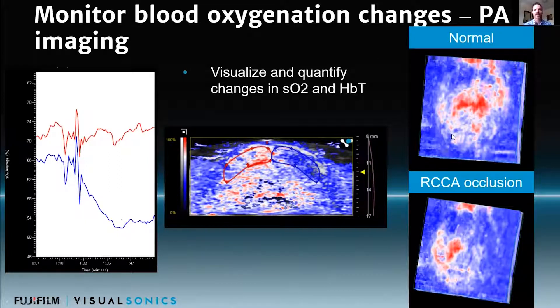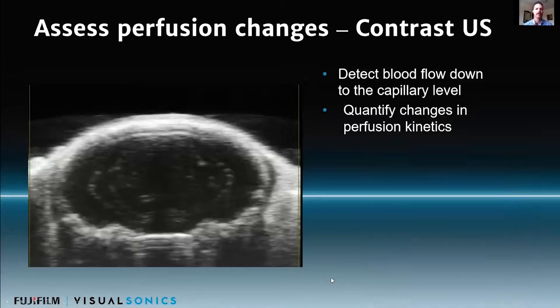We can do 3D scans as well, where you're looking at a top-down view of the brain, and you can see the difference between a normally perfused brain and this right common carotid artery occlusion model.